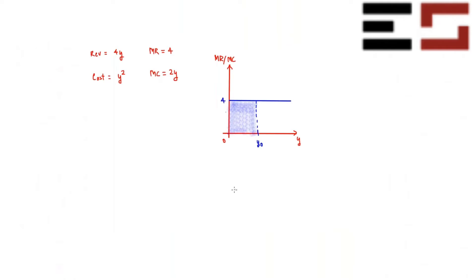You can verify this: the height of the rectangle is four, the length is y-naught, so the area is four times y-naught, which is exactly equal to the revenue at y-naught. That confirms the interpretation.